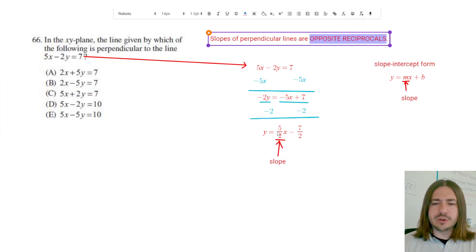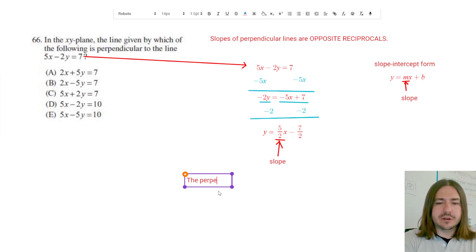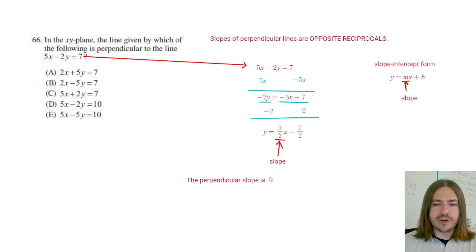So opposite meaning the slope needs to be negative and reciprocal means that we're going to flip the fraction. So I'm just going to make a little note that the perpendicular slope is negative 2 over 5. So as I look through these equations, what I want to do is find the answer choice that has a slope of negative 2 over 5.